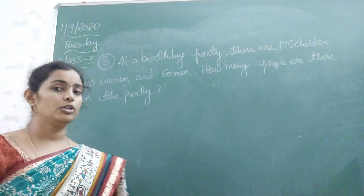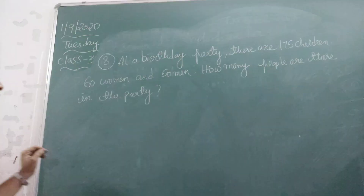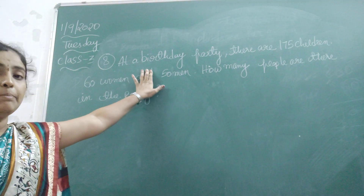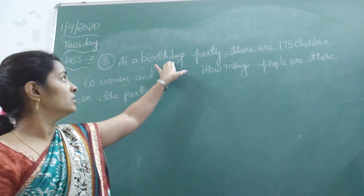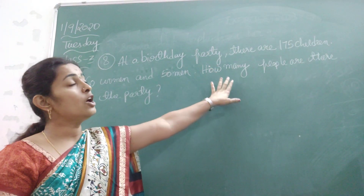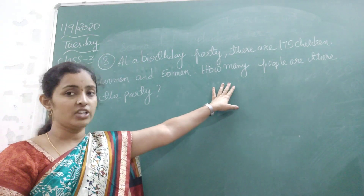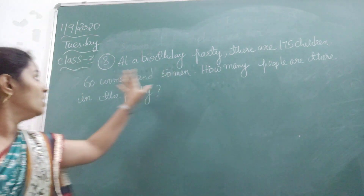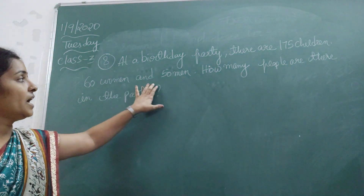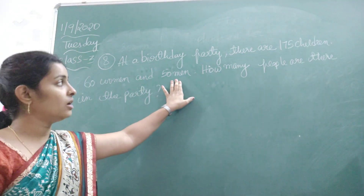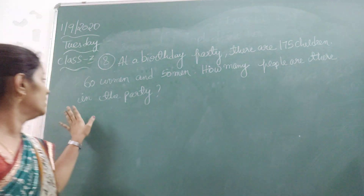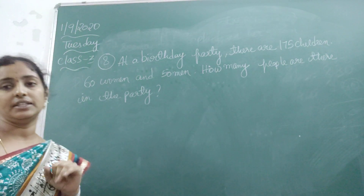Welcome back children. Now we will see the next two problems. Eighth one. At a birthday party, there are 175 children, 60 women and 50 men. How many people are there in the party?